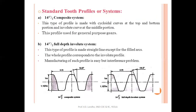Now how does this tooth profile look? The 14.5 degree composite system has a cycloidal curve at the top and bottom portions, while the involute runs in the middle portion. The pressure angle is measured accordingly. This is the pitch, which has the distance between two consecutive points. The addendum standard value is 1m and the dedendum is 1.157.